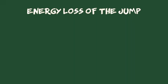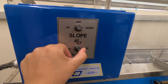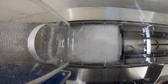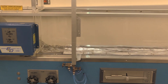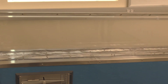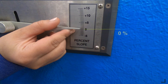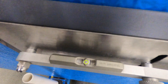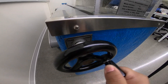The formula for the energy loss will be shown. We turn on the pump, set the bed slope close to zero, and check the level. We then raise the downstream water level until the hydraulic jump is established.